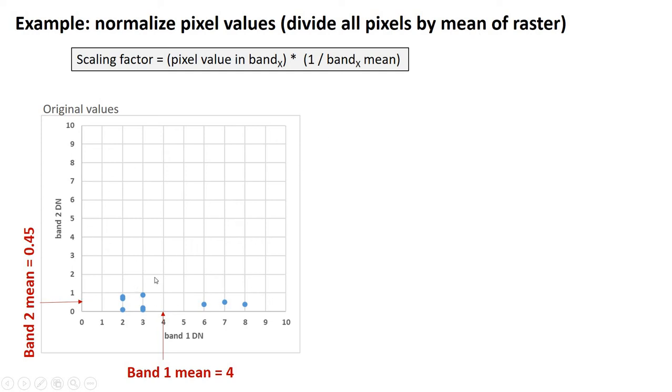So, here's the original values that we plotted. Band 1 has a mean of 4, and band 2 has a mean of 0.45. So, they have really different means. Band 1's mean is almost 10 times higher than band 2. And that's why it is kind of favored in a straightforward classification algorithm.